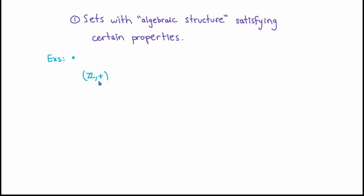The integers together with addition satisfies a lot of nice properties. Addition is associative, it's even commutative, there's a special integer called zero with the property that when I add it to any other integer it doesn't change the other integer, and also for every integer there's a negative of the integer with the property that when I add an integer to its negative I get zero. You don't need to worry about all those properties just mentioned — they're going to come up again in later videos when we talk about binary operations and definitions of groups and abelian groups.